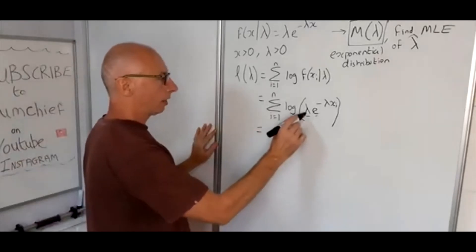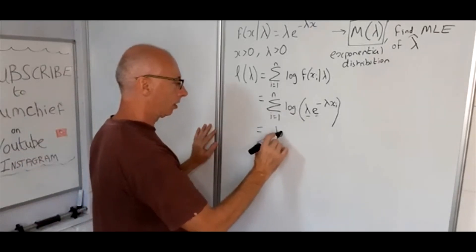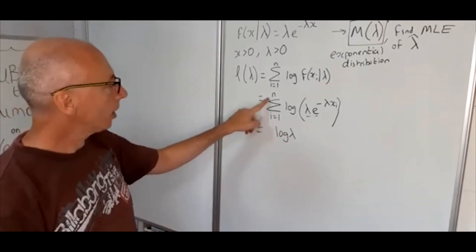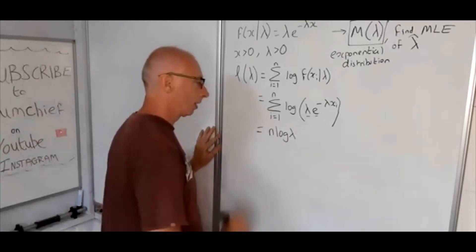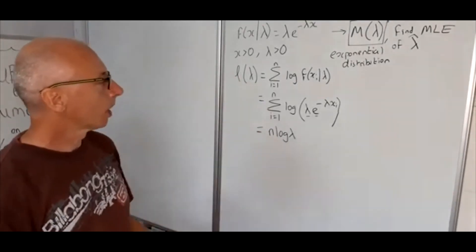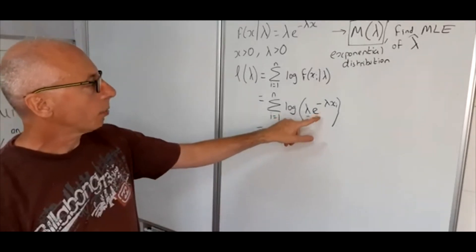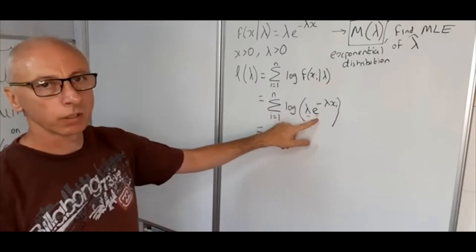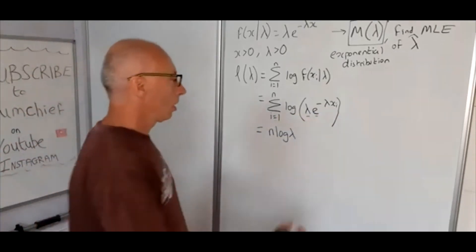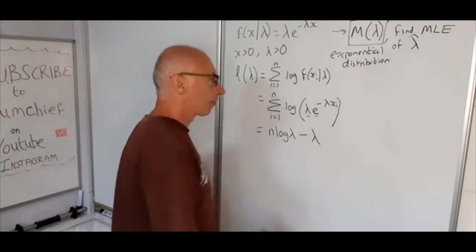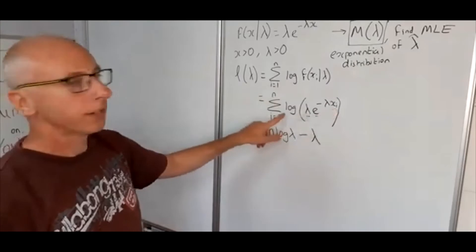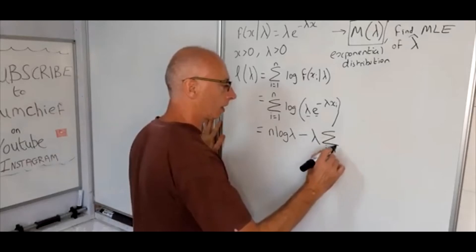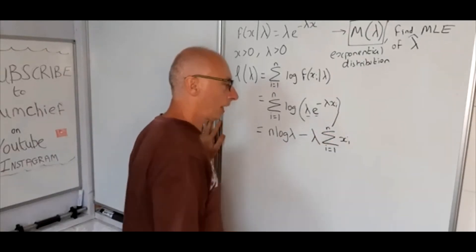Taking the log, we get log(lambda) summed n times, which gives n * log(lambda). Then we deal with the exponential term: since log and exponential are inverse functions, log(e^(-lambda * x_i)) = -lambda * x_i, leaving us with the summation from i = 1 to n of x_i.